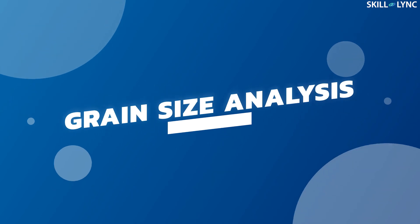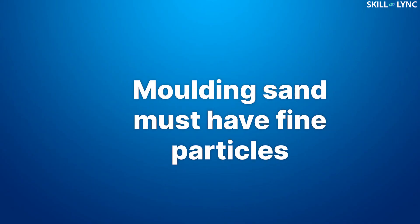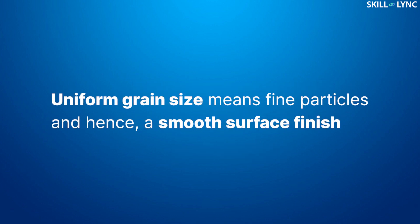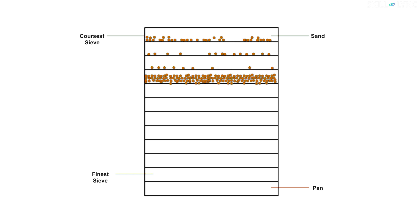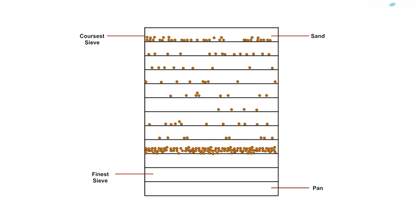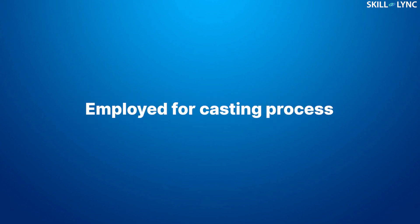The first test is grain size analysis. The final casting requires a smooth surface finish, and to obtain that, the molding sand must have fine particles. If the grain size is uniform, the sand will have fine particles and a smooth surface finish can be obtained. To determine grain size, a set of 11 standard sieves with decreasing mesh size is used. A known amount of green and dry sand is shaken downward into the sieves for about 15 minutes. The amount of sand remaining in each sieve is weighed, and the weights are converted to AFS grain fineness number (GFN). If the sand possesses the required GFNs, it will be employed for the casting process.